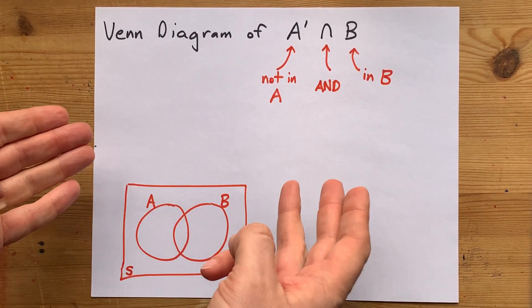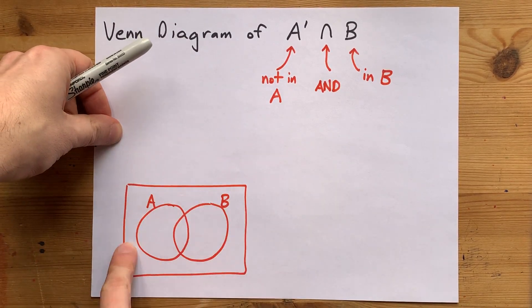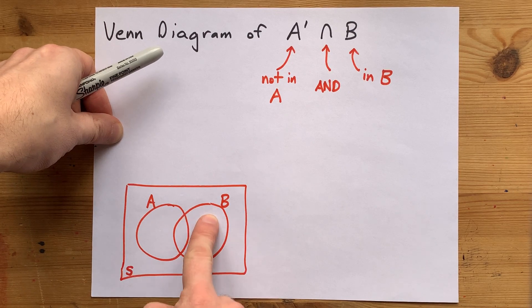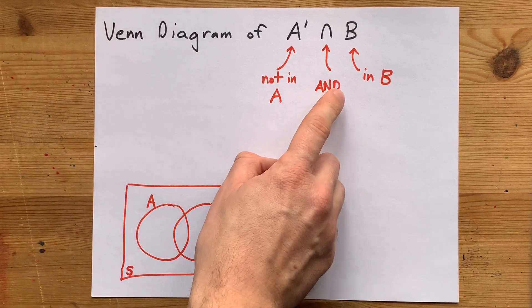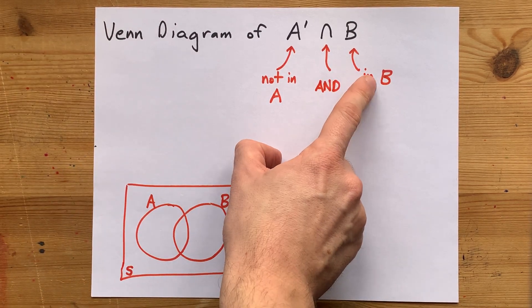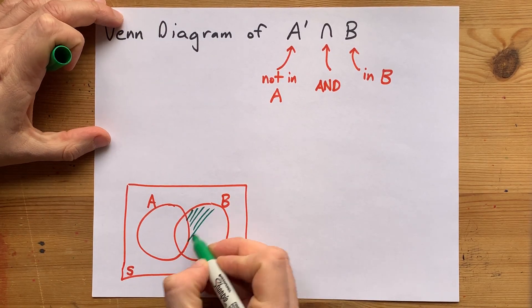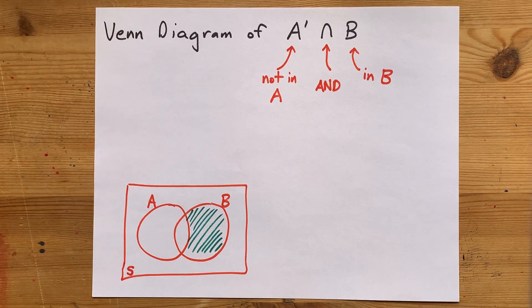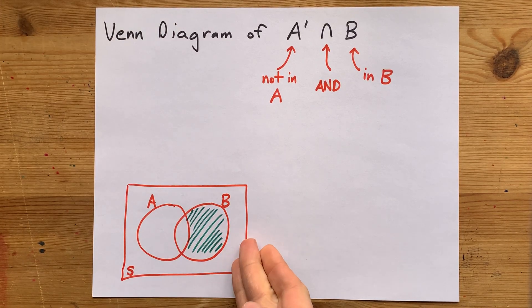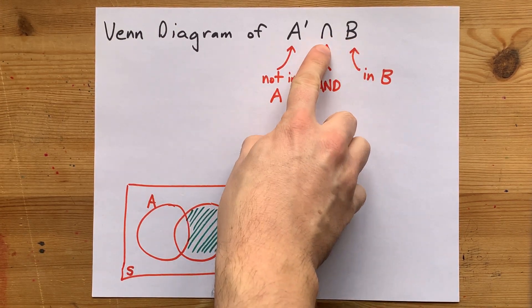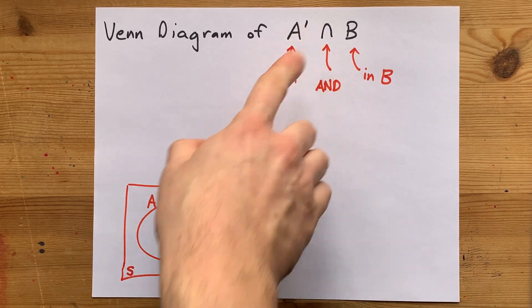So the only options we have are this outer portion and this portion of B. But we also require it to be inside of B as well. So the only area we get to shade is this. There's your Venn diagram. It is inside of B and not inside of A.